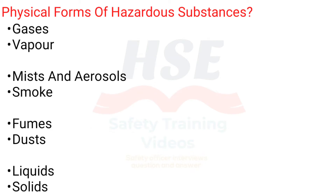Physical forms of hazardous substances include Gases, Vapour, Mists and Aerosols, Smoke, Fumes, Dusts, Liquids, and Solids.